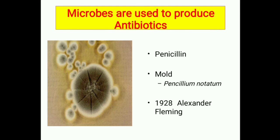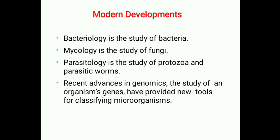In 1928, Alexander Fleming made this discovery. Modern developments: bacteriology is the study of bacteria; mycology is the study of fungus; parasitology is the study of protozoa and parasitic worms. Recent advances in genomics — the study of an organism's genes — have provided a new tool for classifying microorganisms.